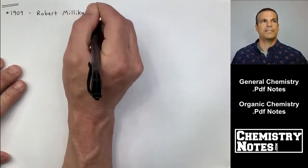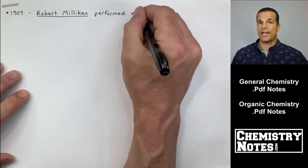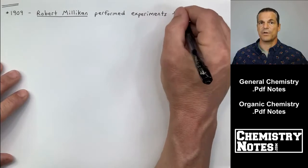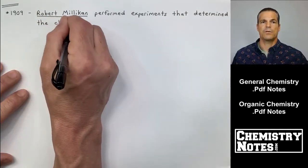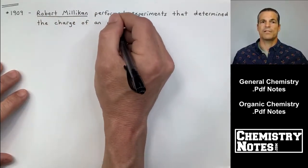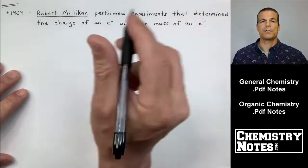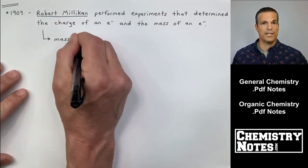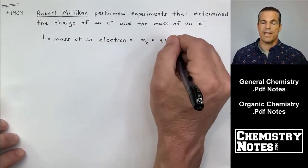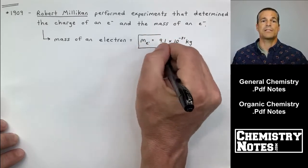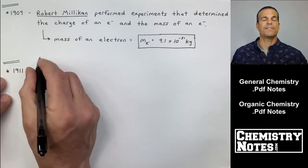This next one, 1909, Robert Millikan. He's about six years after J.J. Thompson's discovery of the electron, which was 1903. In 1909, Robert Millikan performed experiments that determined the charge of the electron and the mass of the electron. So J.J. Thompson discovers the electron in 1903, and in 1909, Robert Millikan discovers the charge of an electron and the mass of an electron. The mass of an electron is 9.1 times 10 to the minus 31st kilograms. Infinitesimally small.